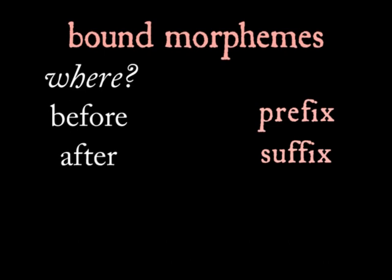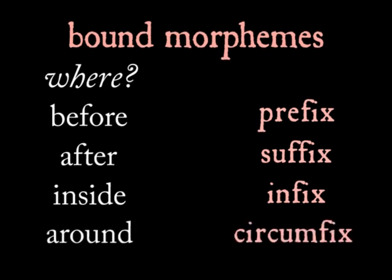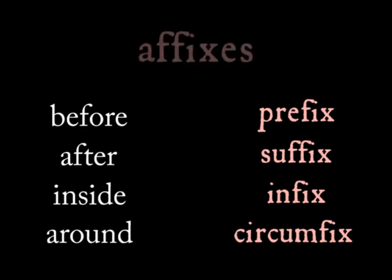There are other examples that actually occur inside of another morpheme, which are called infixes, and bound morphemes that attach around another morpheme, which we call circumfixes. These are a little more exotic. All of these are known as affixes, which is a Latin way of saying that they're attached to another word.